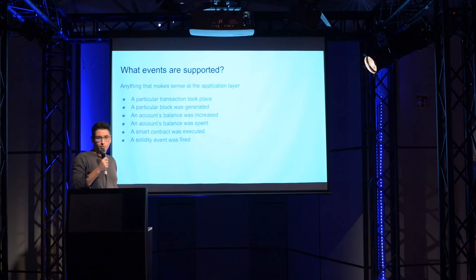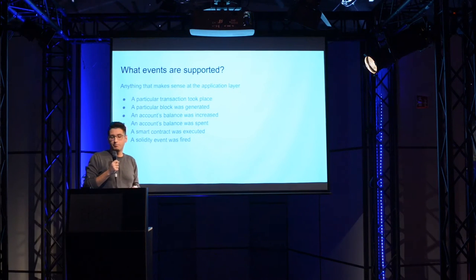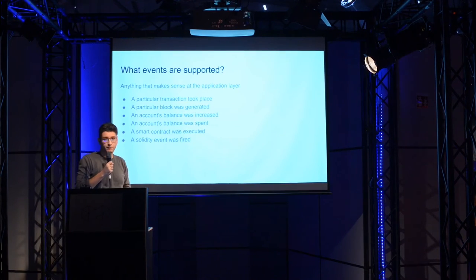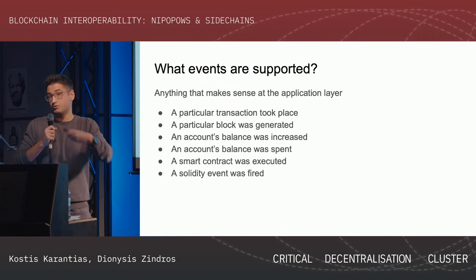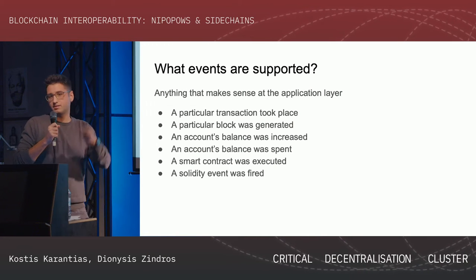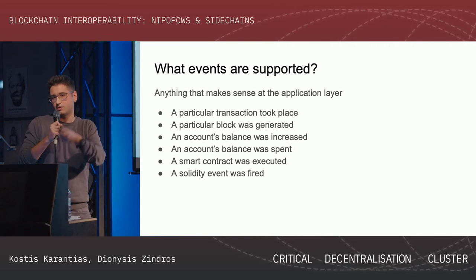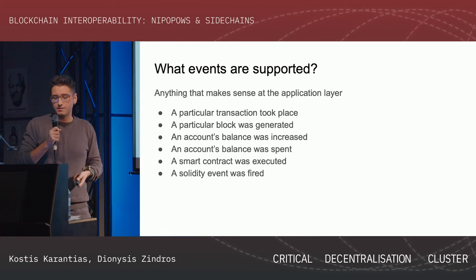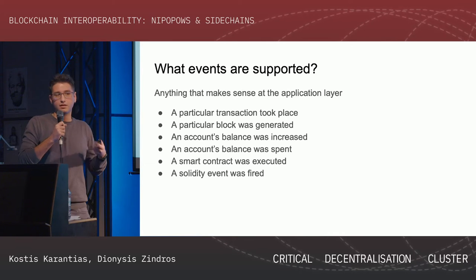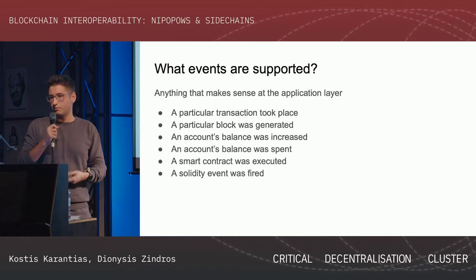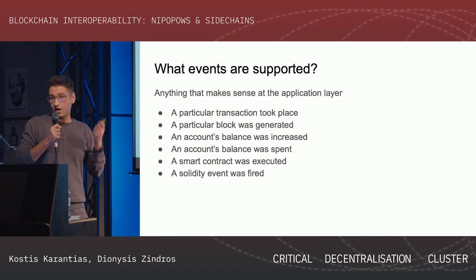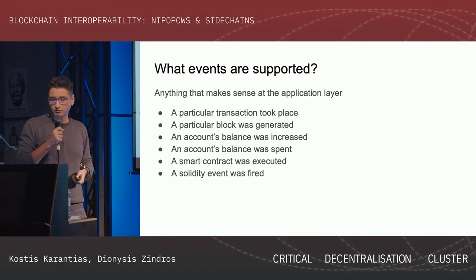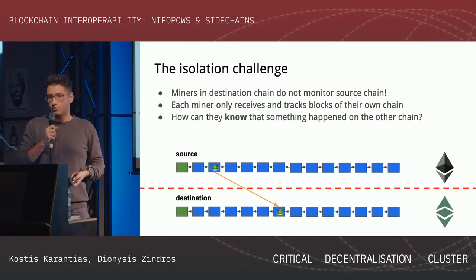An event can be something like: this transaction happened on some chain, or this block was mined with a particular property, or changes in account balances, or Solidity events. Solidity events can be fired, are recorded permanently, and can be used by other applications — we'll make heavy use of those. We start with a smart contract called CrossChain on the destination chain. All it knows initially is the genesis of the source blockchain, and we construct it with that genesis.